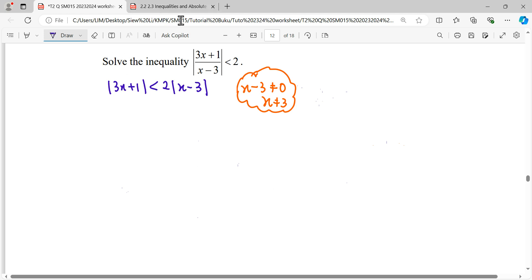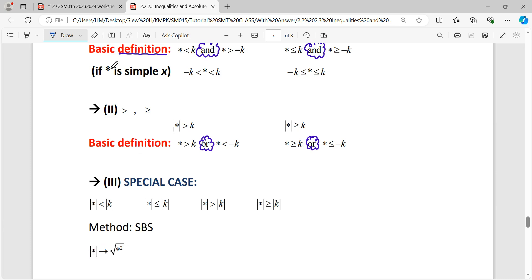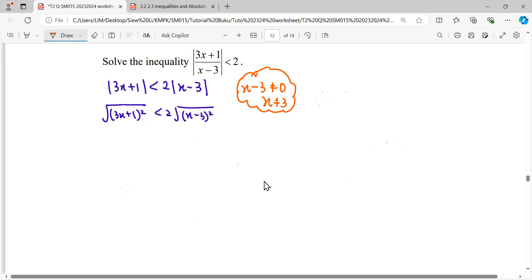When we have both side modulus, what we need to do is we're going to square both sides, rewriting our modulus symbol to be square root squared. So after rewriting our modulus symbol to be square root squared, to remove the square root we square both sides.